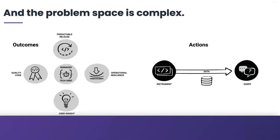We care about predictable releases, we care about quality code, we care about managing tech debt, operational resilience, and user insights. Observability is not the frosting that you put on the cake after you bake it — the way we used to do with monitoring checks, very much treating our systems as black boxes. It's very much about ensuring your code is written correctly, performing well, and doing its job for each and every single user.